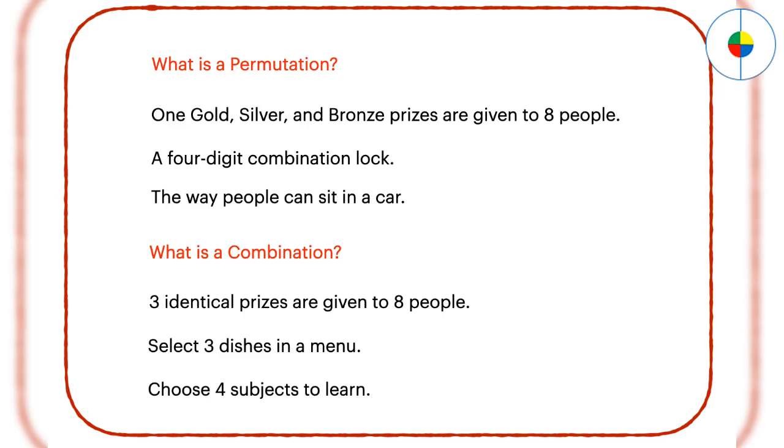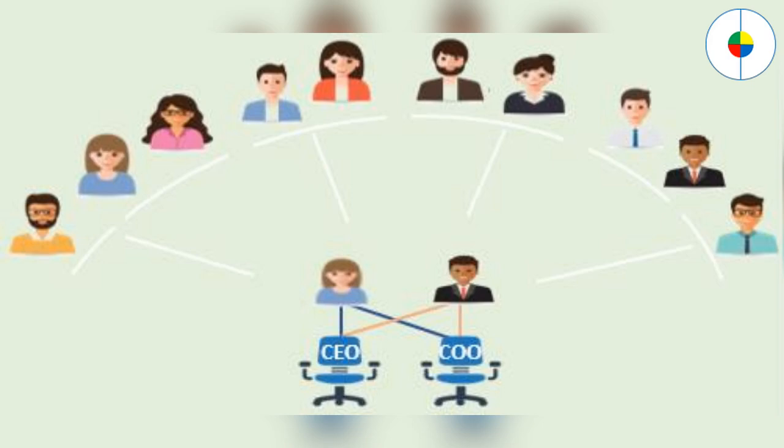A combination is an arrangement of objects where the order in which the objects are selected does not matter. Repetition can be allowed, or there is no repetition allowed. To make it simple, order is important to permutation, but has no effect on combination.